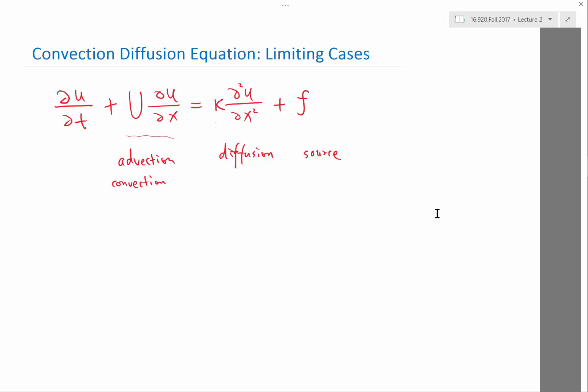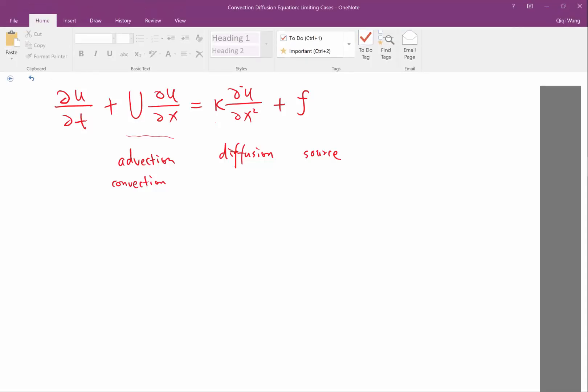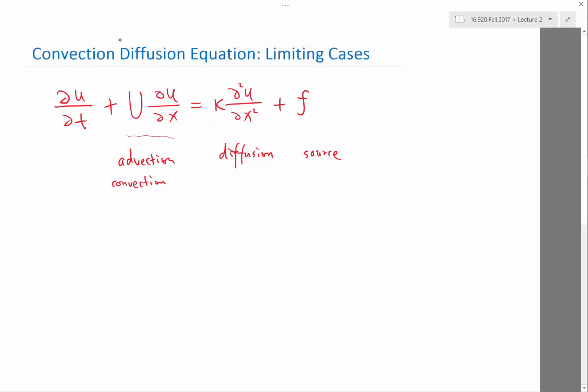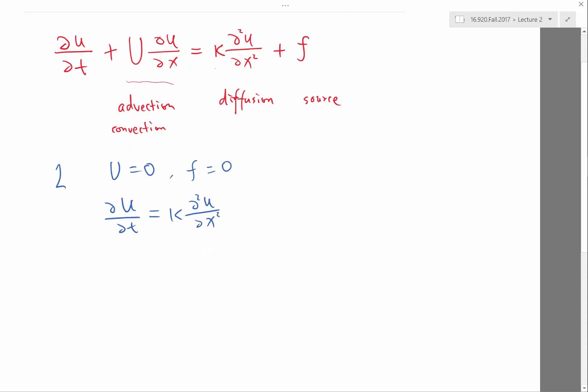Today, let's look at a first example of how can you tell if a numerical solution is supposed to behave as it does. We will be looking at the behavior of three limiting cases. The first limiting case is when U is equal to zero, and let's also set f equal to zero. In this case, we get partial u partial t equals kappa times partial squared u partial x squared. This equation has a pretty simple name - it's called the heat equation.